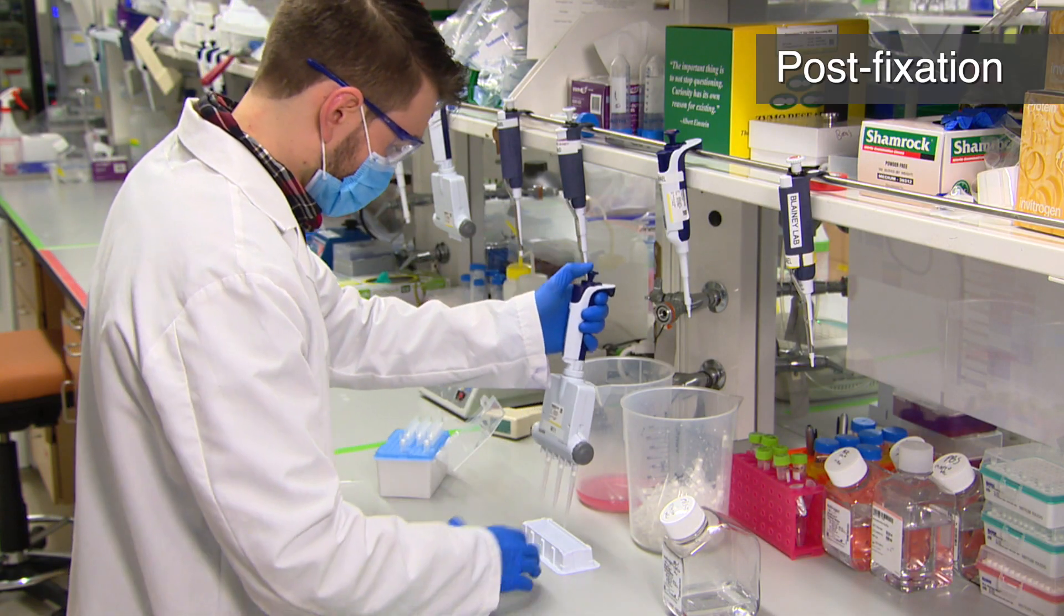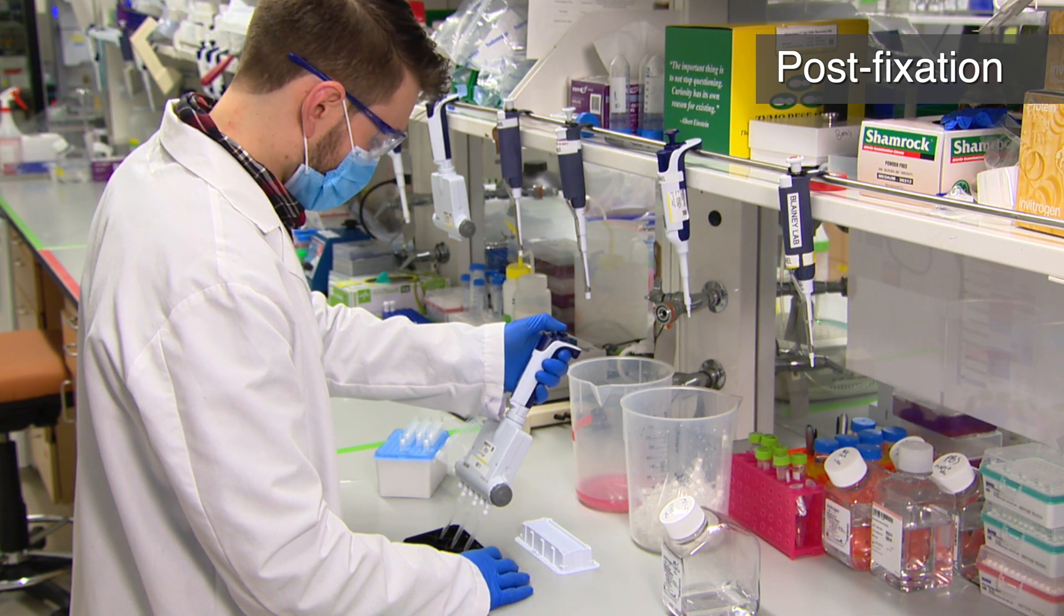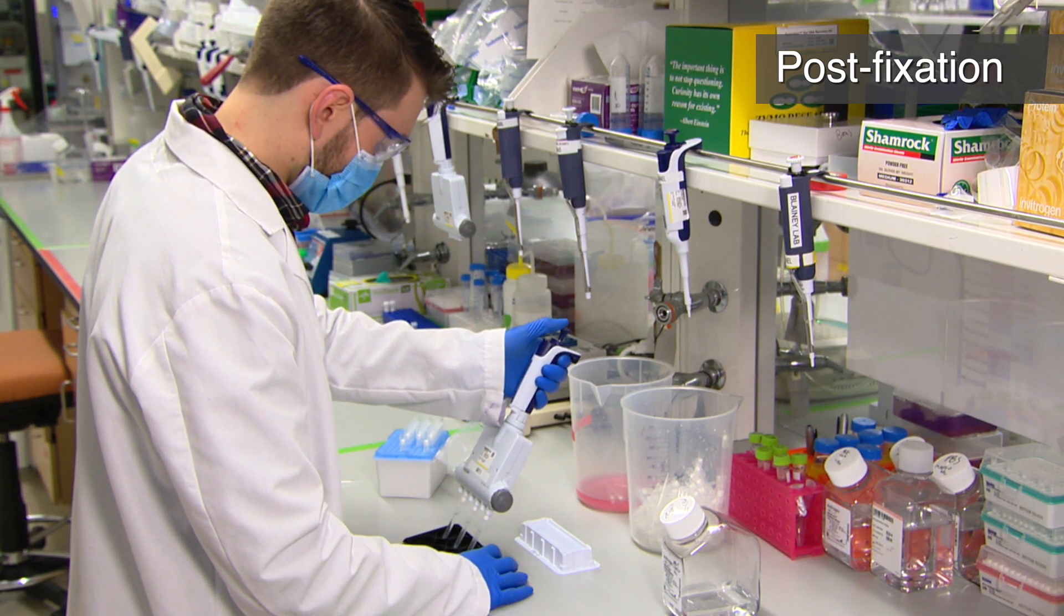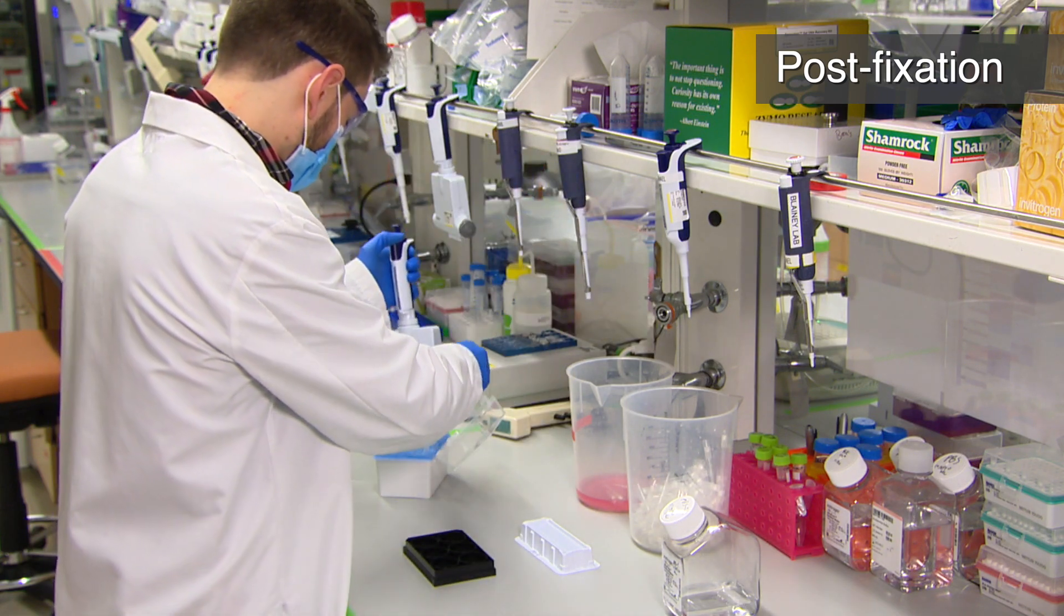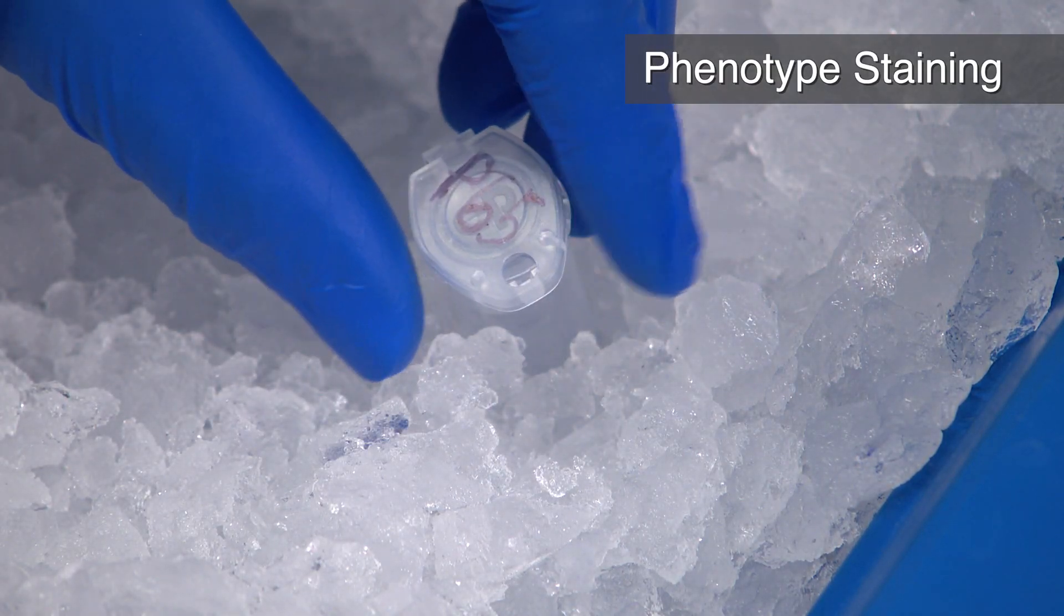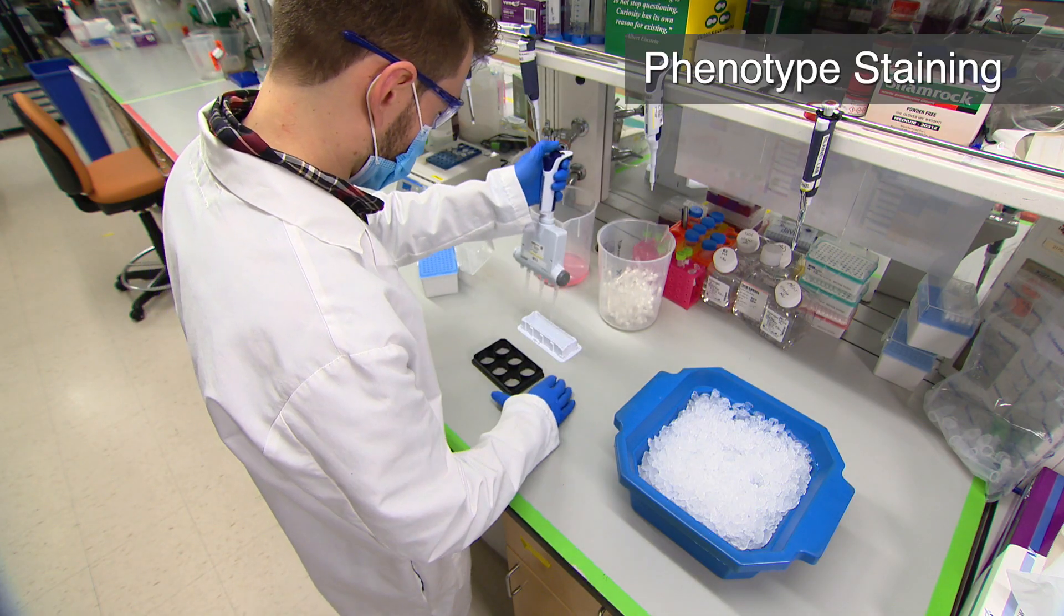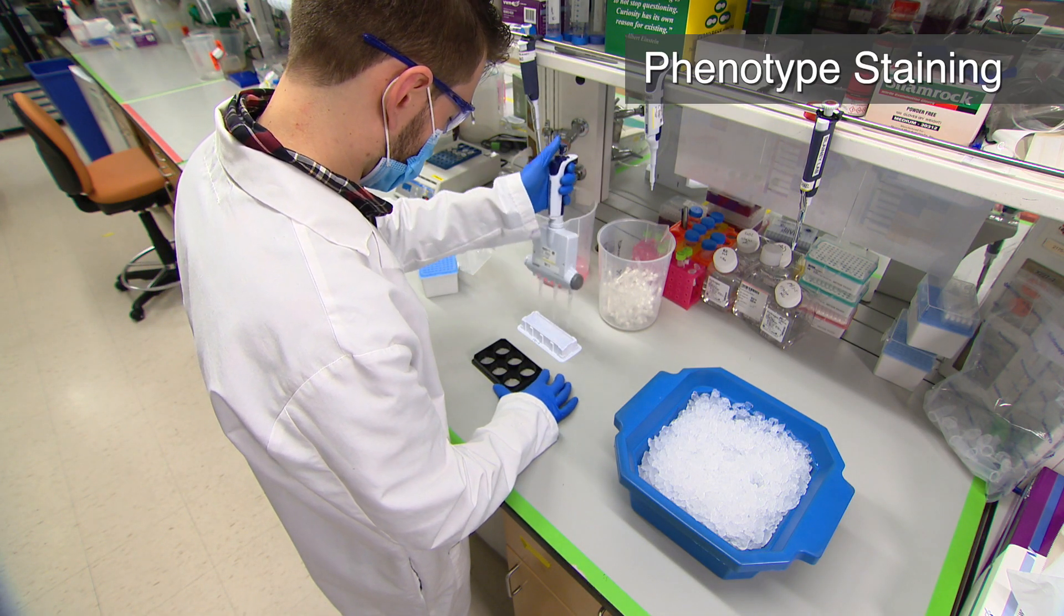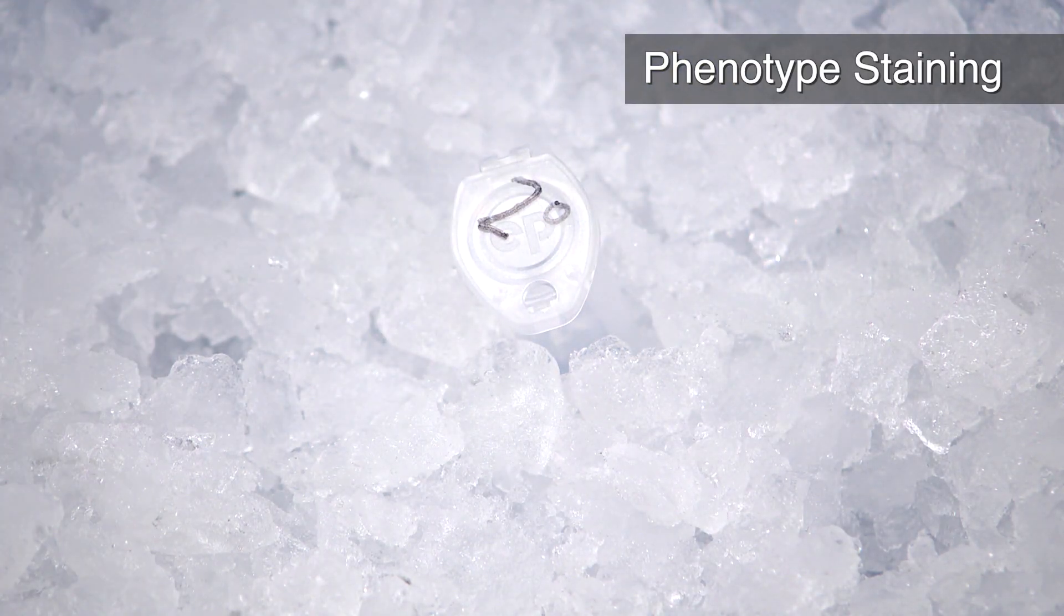The next day, wash 6 times with PBS-T and fix with 3% paraformaldehyde and 0.1% glutaraldehyde in PBS for 30 minutes at room temperature. Wash 3 times with PBS-T and stain with P65 primary antibody for 1 hour at room temperature. Then, wash 3 times with PBS-T and incubate with secondary antibody for 45 minutes at room temperature.